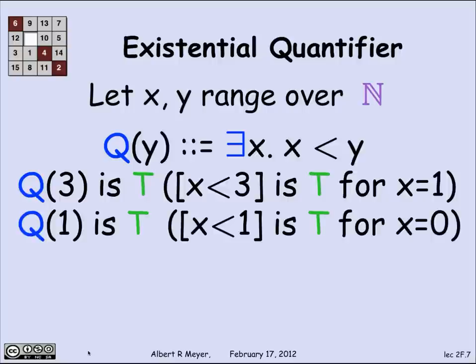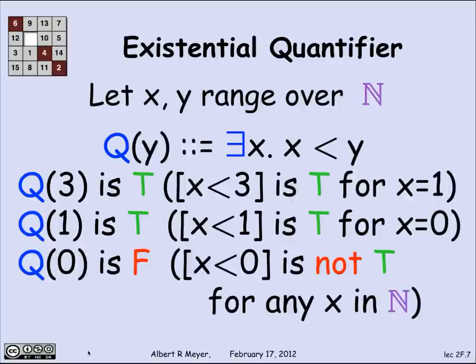So that means there is an x that's less than 3 because 1 is, so that makes Q(3) true. What about Q(1)? Again, there's an x that's a non-negative integer, namely 0, that's less than 1. And therefore Q(1) is true. On the other hand, Q(0) is false, because there is no non-negative integer that's less than 0.